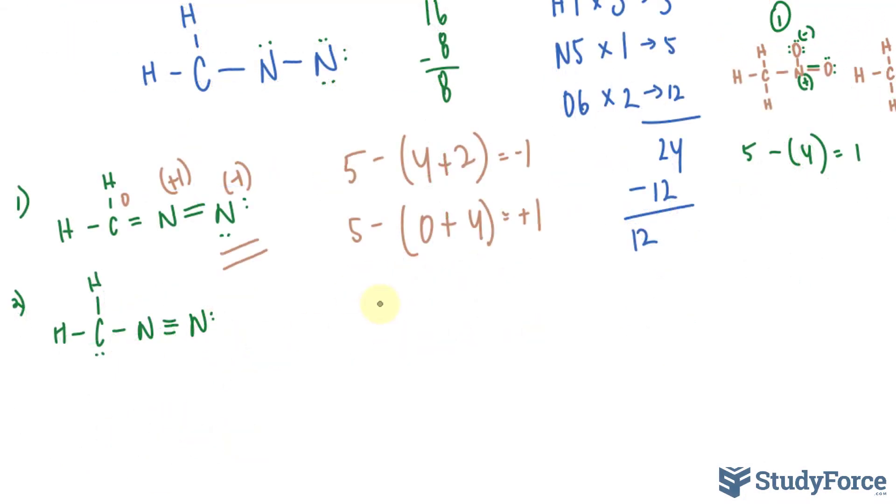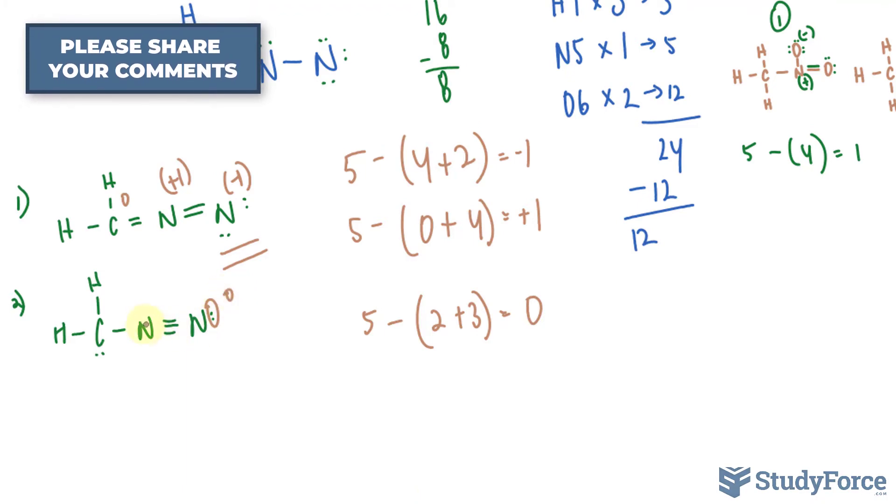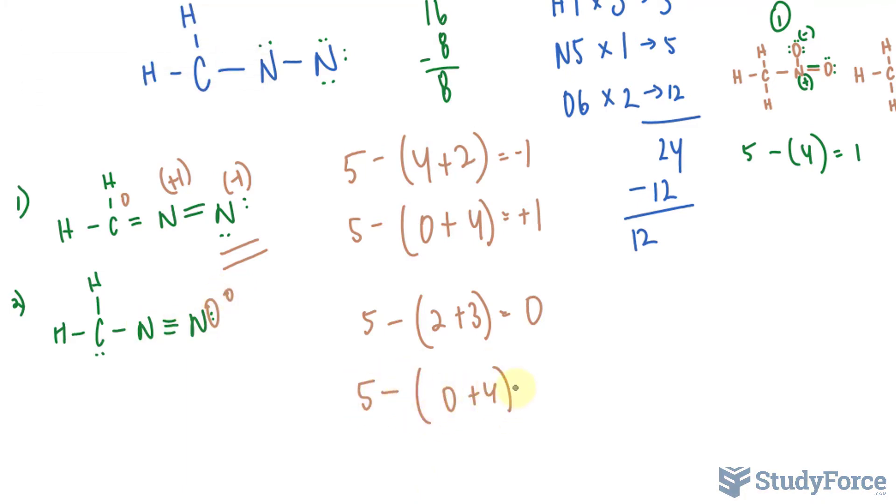Let's do this one. For this nitrogen, we have 5 minus 2 plus 3. That means it's 0. This is neutral. For that, 5 minus 0 plus 4. That's positive 1. So this is positive 1. Over here, 4 minus 2 plus 3. That's negative 1.